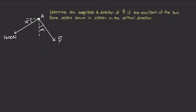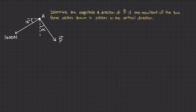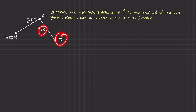This means that if you added vector P plus this 1600 newton force vector, you would get a resultant vector acting straight down with a magnitude of 2500 newtons. Normally in previous examples we've been trying to find the resultant vector, but here the resultant is given. The problem-solving concepts remain the same — we still want to add these two vectors together and create a diagram we can use trigonometry on to figure out P and the alpha angle.